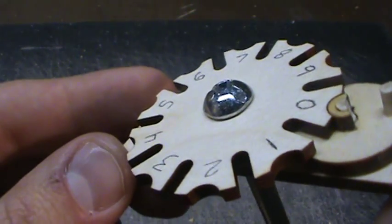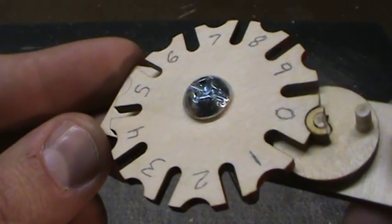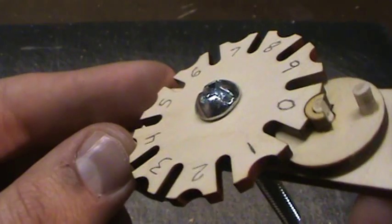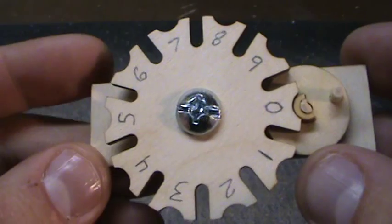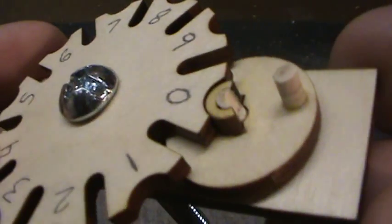I drew this up in AutoCAD, sent it up to Ponoko, and had them laser cut it from some eighth inch plywood. We've got a 10 position Geneva wheel here.